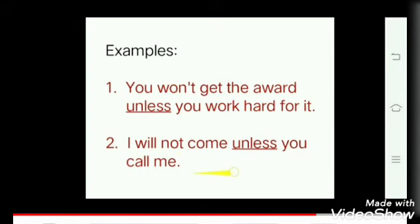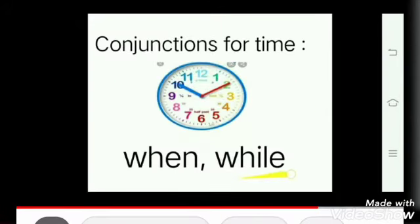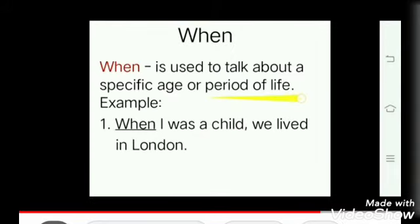Next set of conjunctions are related to time. It is when and while. When is used to talk about a specific age or period of life. For example, when I was a child, we lived in London.